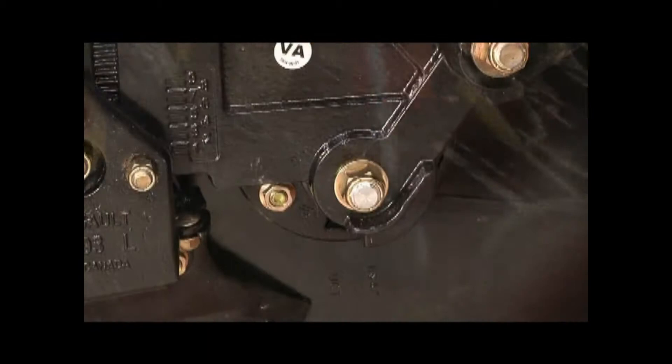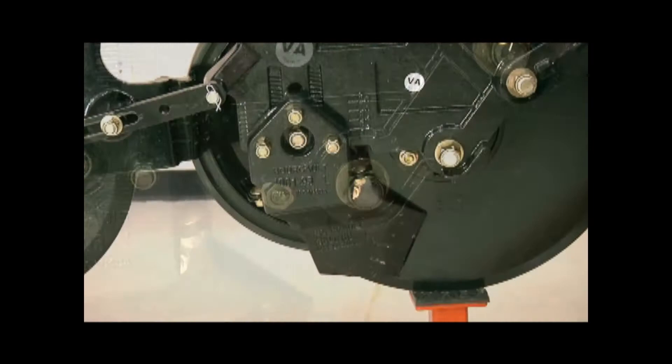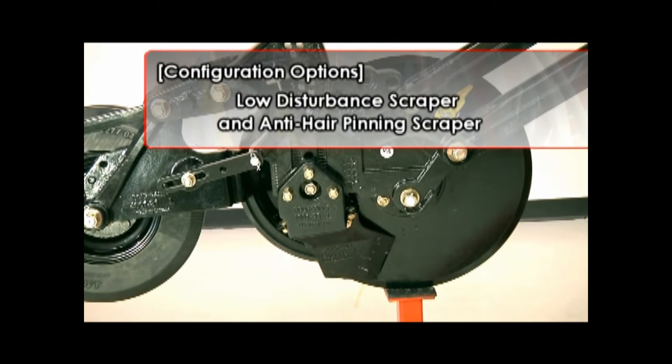The disc is mounted to a 1,250-pound hub designed to give many acres of service. The hub is designed for easy removal so that it can be taken off and serviced in a more convenient location for the operator.